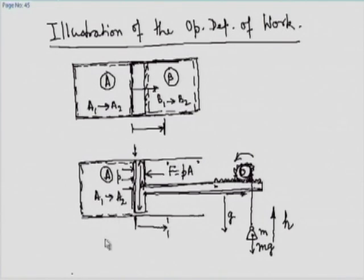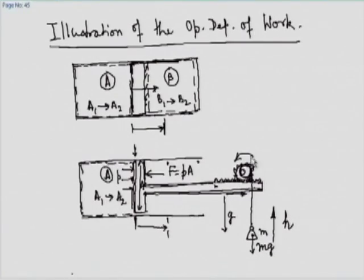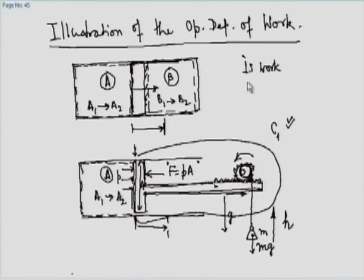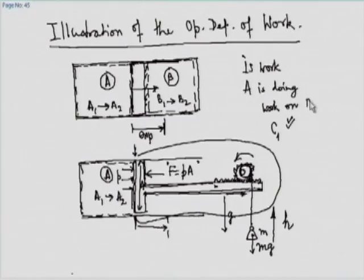If as the gas expands the pressure reduces, then naturally the force has to reduce. So this mass will have to be bit by bit reduced to maintain equilibrium throughout the process. This is our C1 contraption. It can be demonstrated that we can set it up. This means this interaction is work, and because it is an expansion — A moves into B — A is doing work on B.